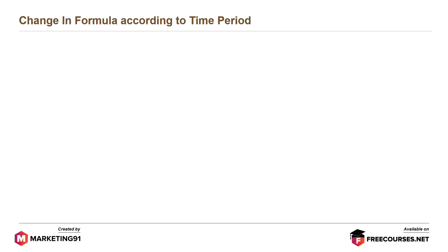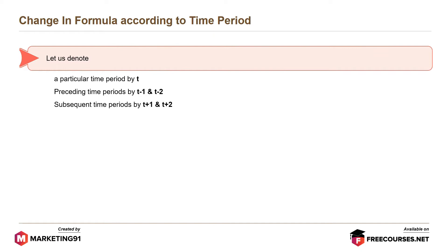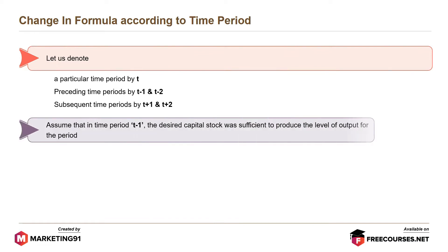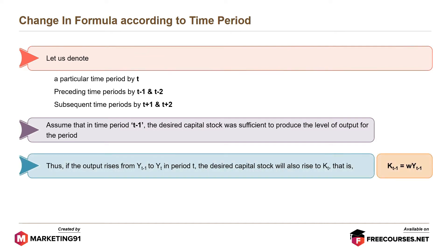The capital output ratio formula changes with change in time period. Let us denote a particular time period by T and preceding time periods by T-1 and T-2. Assume that in time period T-1, the desired capital stock was sufficient to produce the level of output for the period. Thus, if the output rises from YT-1 to YT in period T, the desired capital stock will also rise to KT, i.e. KT-1 equals WYT-1.